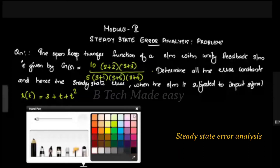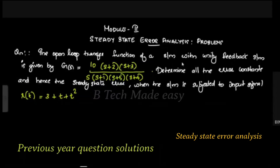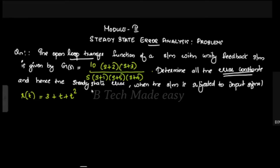First question: the open-loop transfer function of a unity feedback system is given by G(s). Determine all error constants — Kp, Kv, Ka — and hence find the steady-state error ESS when the input R is subjected to a value of 10.